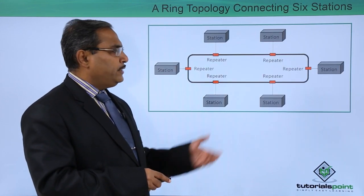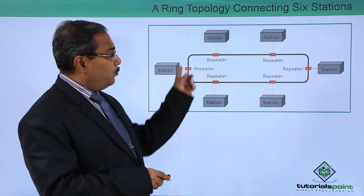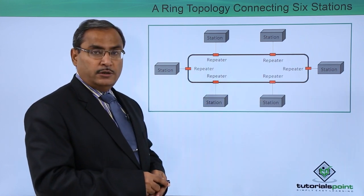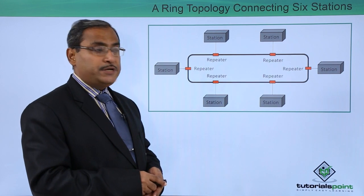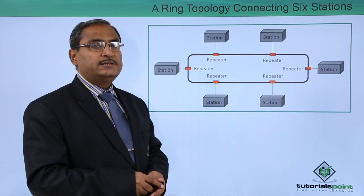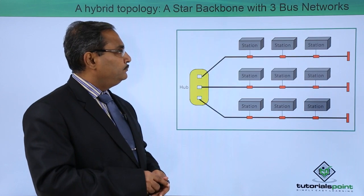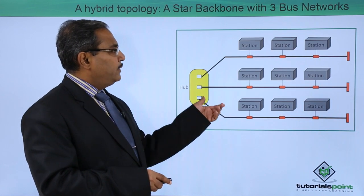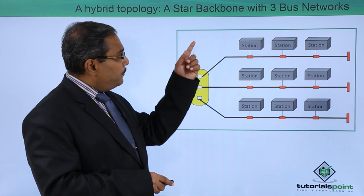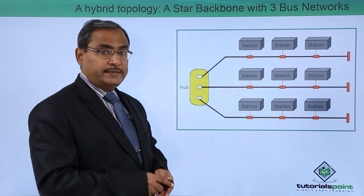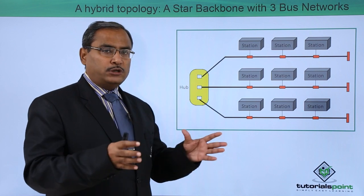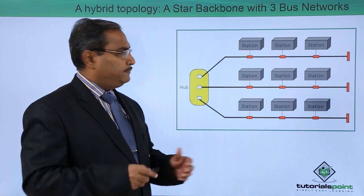We have the ring topology, where one ring connects multiple stations using some repeaters — that is known as a ring topology connecting six stations. We also have a hybrid topology: a star backbone with three bus networks, where the topologies get mixed up.